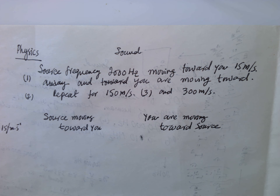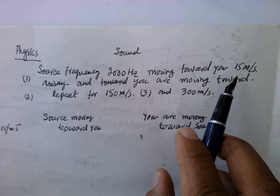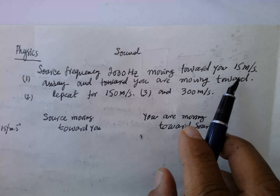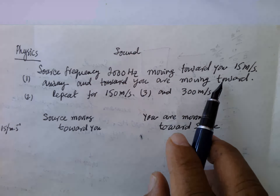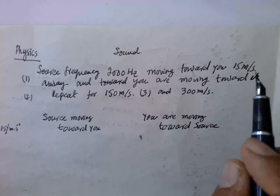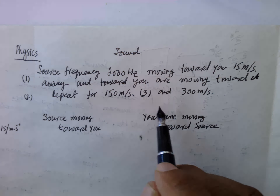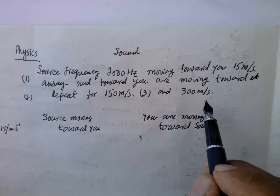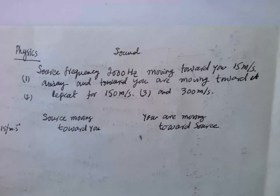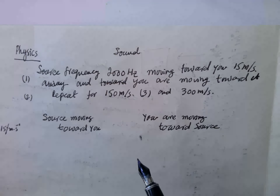Hello, Physics Sound. The problem is very interesting. A source emitting a frequency of 2000 Hz is moving toward you at a speed of 15 m/s, and in the second case, you are moving toward it with the same speed. We consider three cases: 15 m/s, 150 m/s, and 300 m/s, and compare whether the source is moving toward you or you are moving toward the source.